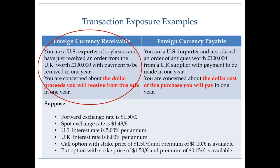Suppose you are a US exporter of soybeans and you just received an order from the UK worth £100,000. You are shipping the soybeans but will receive payment in one year's time. You do not know what the future exchange rate between pounds and dollars will be in one year. So you are concerned that the dollar proceeds from the sale will be higher or lower depending on the future spot rate. You know you will receive £100,000, but you do not know whether that will convert to $150,000, $130,000, $120,000, and so on.